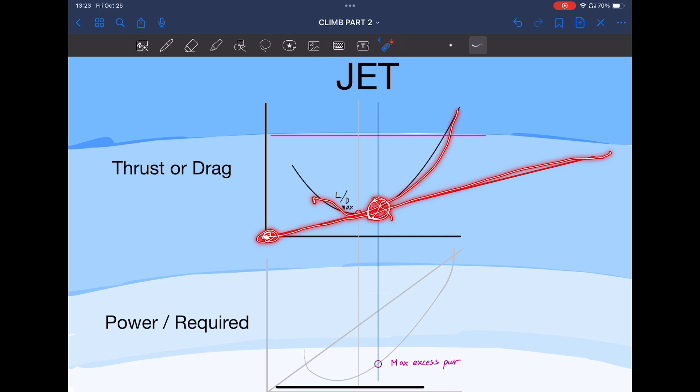I faded out the bottom graph because I didn't want it to be a distraction for me drawing that tangent line on the drag curve itself. If you follow that blue vertical line down to the power curve, it intersects where you have the most excess power. This is your VY speed or your best rate of climb speed.